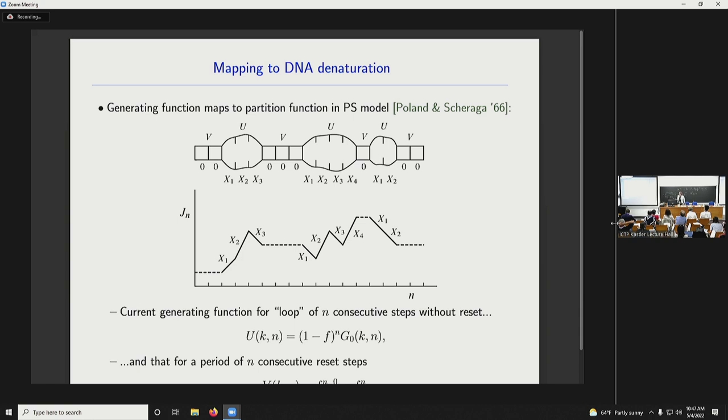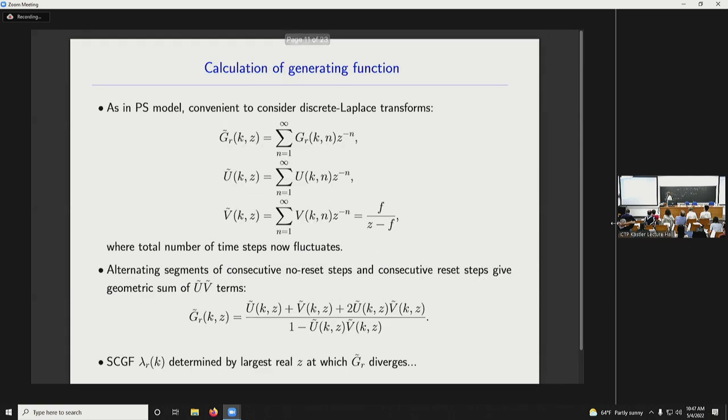So I have these pieces, the generating function for the part with reset and without reset. And I want to sort of put those together to get the generating function for the whole thing. But it's a bit tricky because the pieces have got to add up to the time I'm interested in. And of course, the trick there, the same as the trick in the PS model and in many other models, is that we do a discrete Laplace transform so that the total number of time steps now fluctuates and we don't have to worry about this constraint on the length. So this is the thing I really want, the generating function with reset. Here's its Laplace transform, g tilde. And here are the Laplace transforms of the loops without reset and the parts with reset. And the part with reset is so easy, you can do it already. And now, if we try and put these bits together to calculate g tilde, you see it's actually very easy because every history of the process consists of alternating segments of reset, no reset, reset, no reset, and so on.